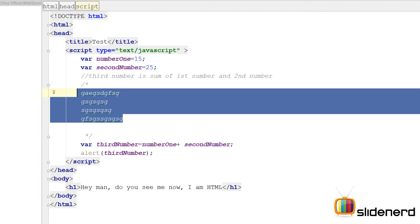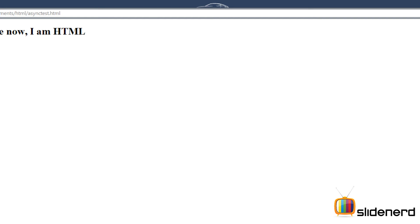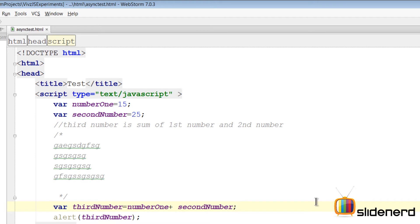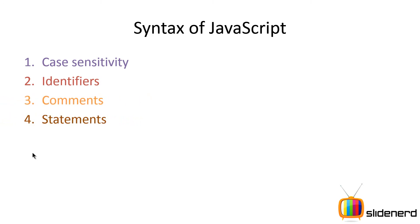If you go and run this in Google Chrome, the alert actually pops up a dialog box which says 40, which is the addition of 15 and 25. It's inside the script tag where all the code is written. So this is just the beginning of JavaScript. What are the things that form part of your JavaScript syntax? Like English has nouns, adjectives, adverbs, JavaScript has certain things: case sensitivity, identifiers, comments, and statements. The first thing I need to tell you is very important.